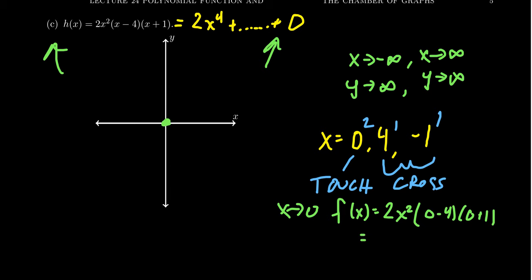We ended up with negative 8x squared. So our function is going to look like a downward-pointing parabola when we are close to the origin. With that information, we're ready to graph our function.